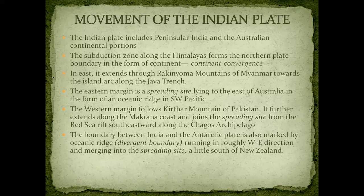Now we come to our last topic: plate tectonics, landforms, and ocean separation. The Indian plate includes peninsular India and the Australian continental part. We see a subduction zone — which we have studied under convergent boundaries. The subduction zone along the Himalayas forms the northern plate boundary in the form of a continent convergence area.